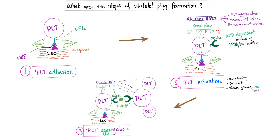Primary hemostasis involves platelet adhesion, platelet activation, and platelet aggregation. Look at fibrinogen — it plays a role in platelet aggregation, and therefore it's going to play a role in blood coagulation as well.